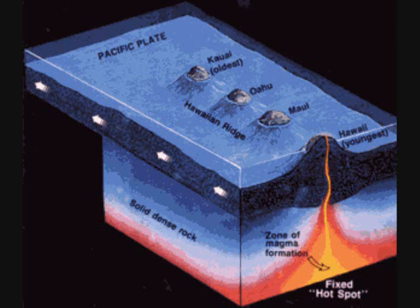Hotspots are small volcanic regions that are usually a few hundred kilometers across. Hotspots form when hotter than normal mantle material, called a mantle plume, goes up toward the surface. Once the plume reaches the top of the mantle, magma forms. The result is a small volcanic region. Most hotspots have lasted for millions of years and are still active today. An example of hotspots are the volcanic mountains that make up the islands of Hawaii.